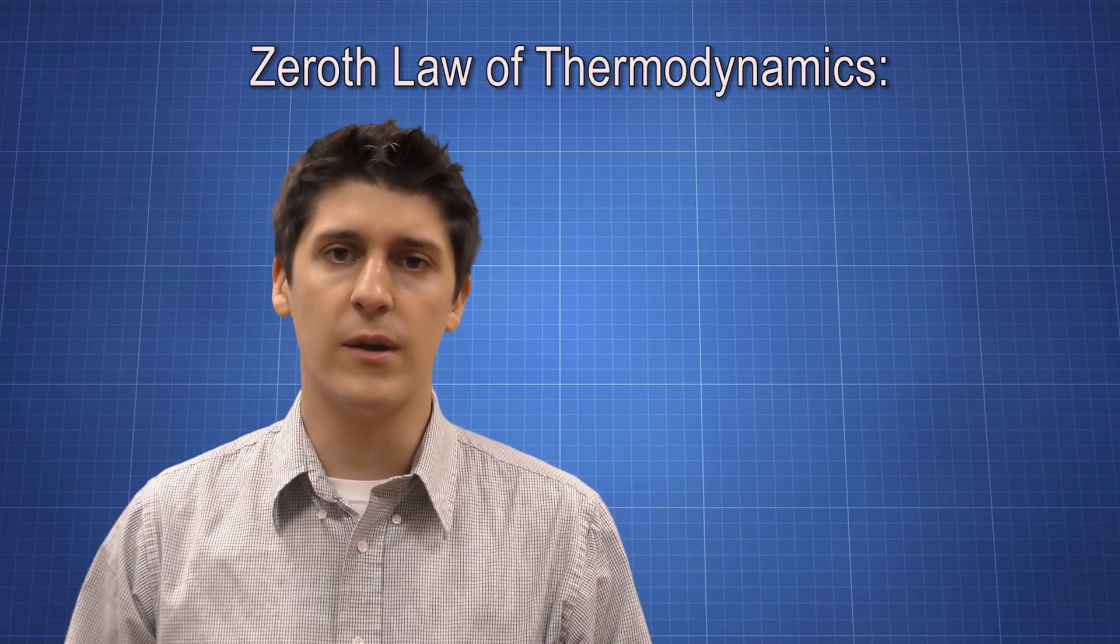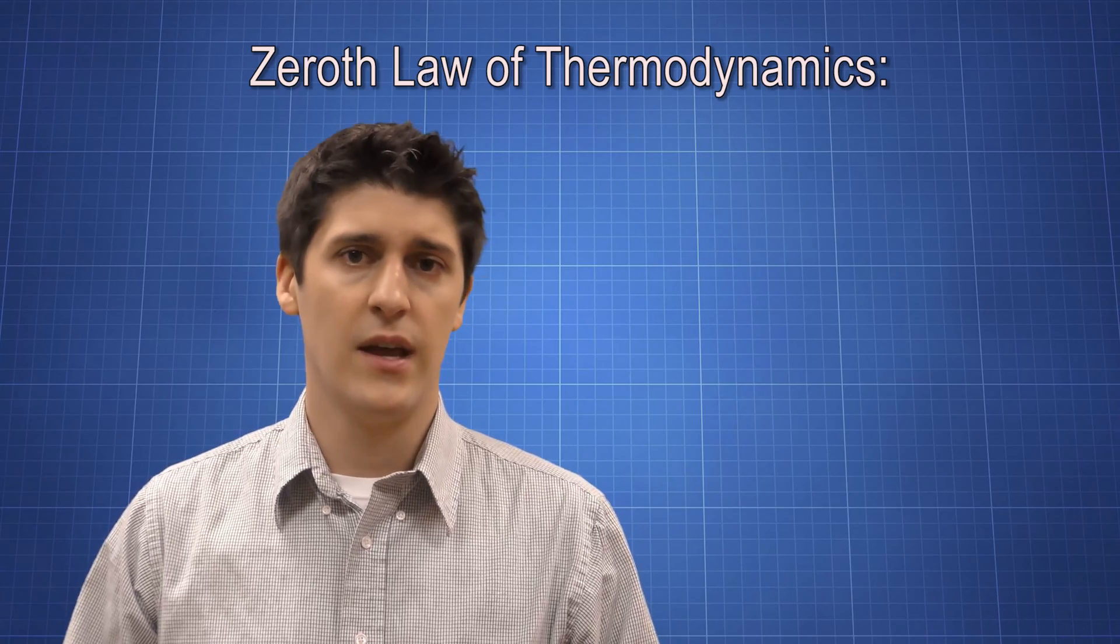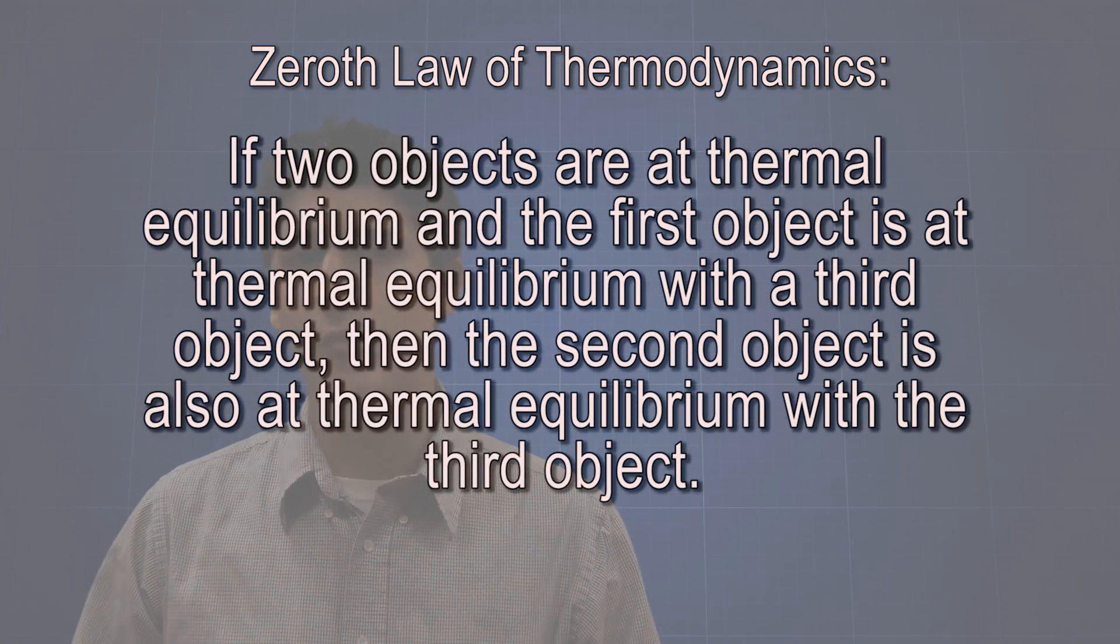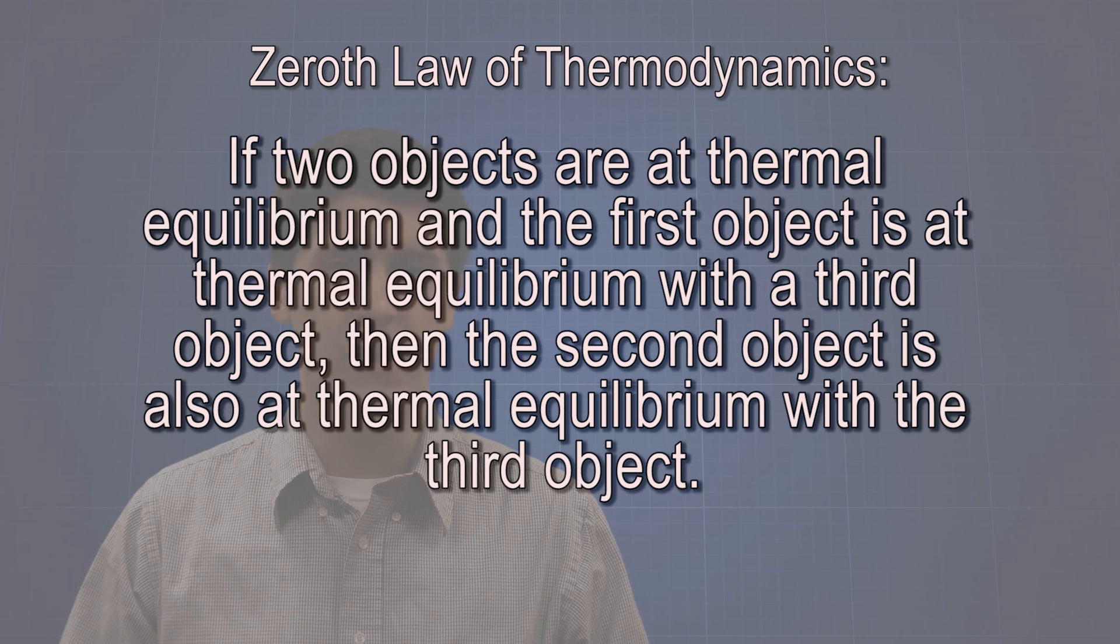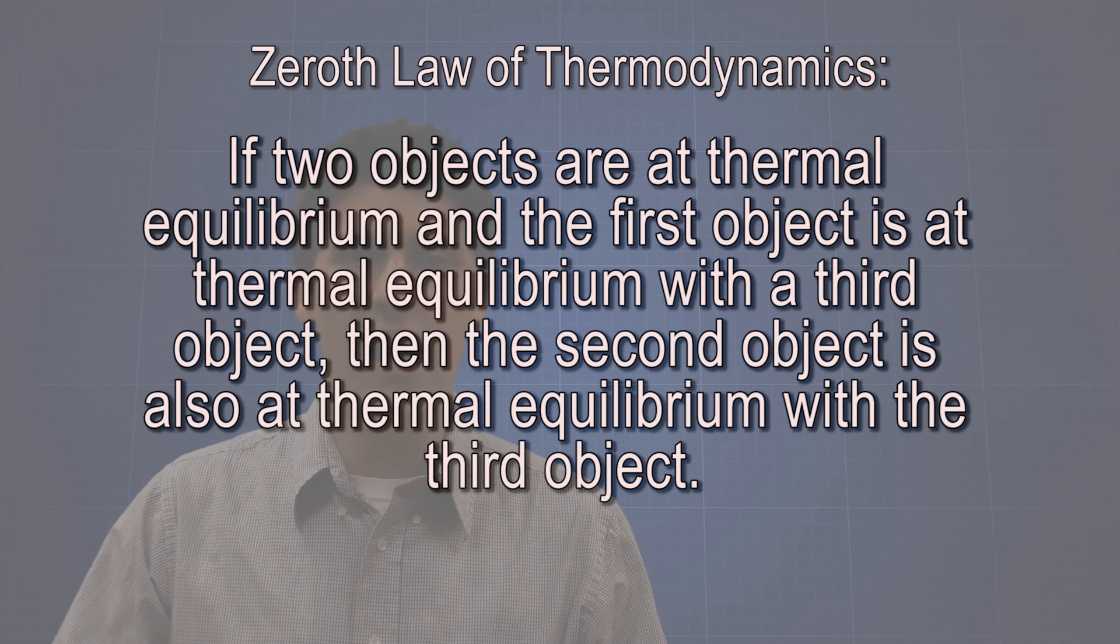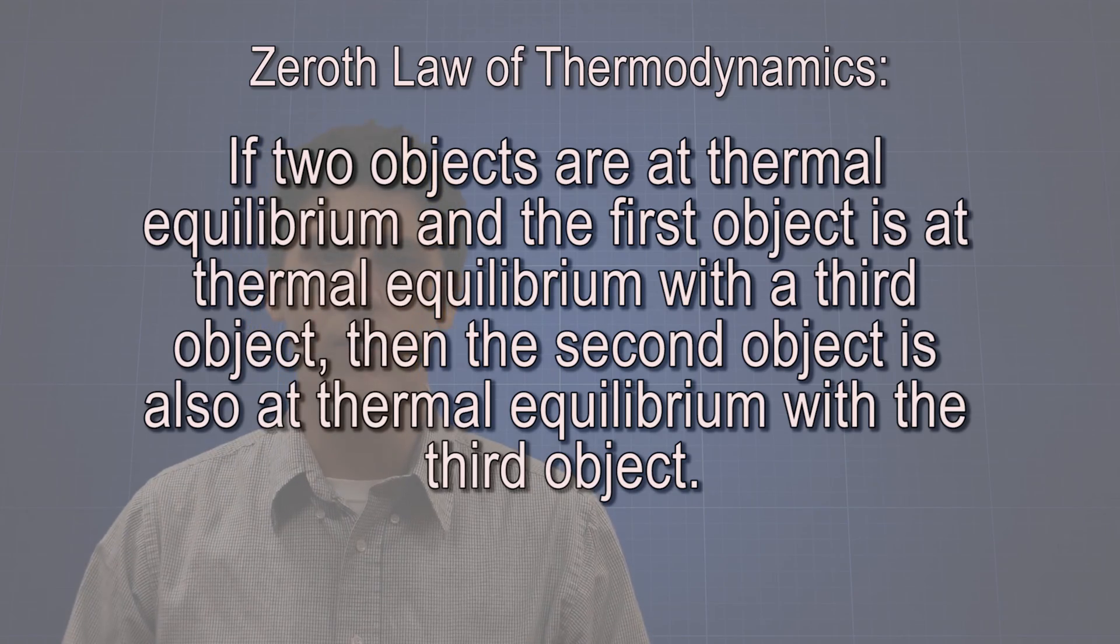This leads us to our zeroth law of thermodynamics. It says this: if two objects are at thermal equilibrium and one of those objects is at thermal equilibrium with a third system, then the other system must also be in thermal equilibrium with the third system. That's a little confusing, so let's look at an example.